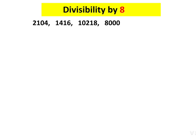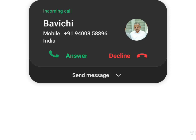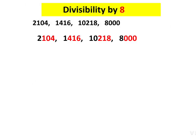For divisibility by 8, there are four numbers to consider. Here, the last three digits are considered. In the same way as divisibility by 4, we check whether the last three digits — such as 104, 416 — are divisible by 8. We can confirm all the numbers in our example are divisible by 8.